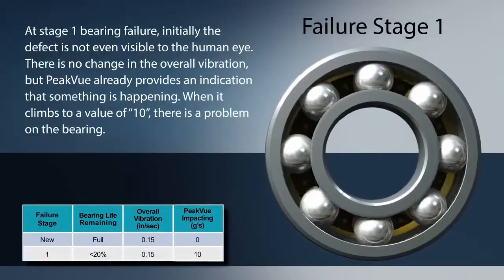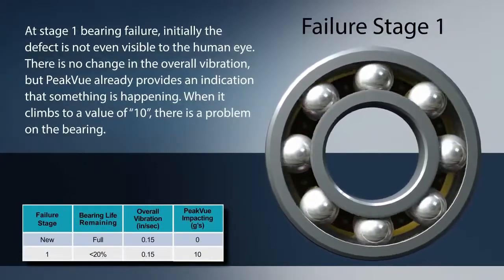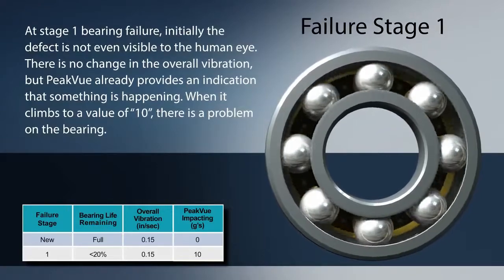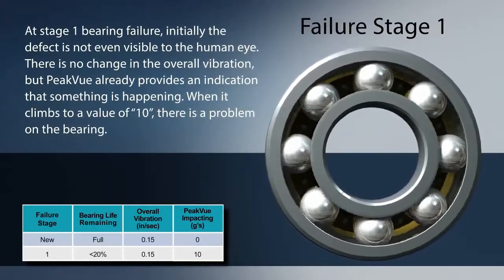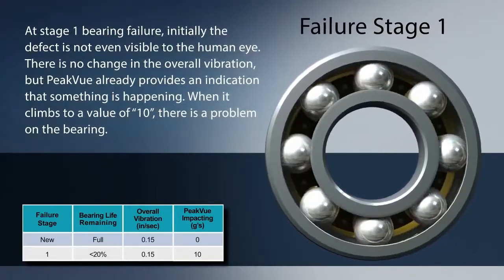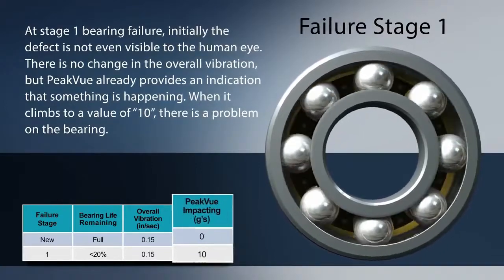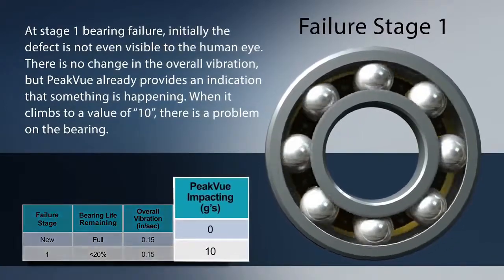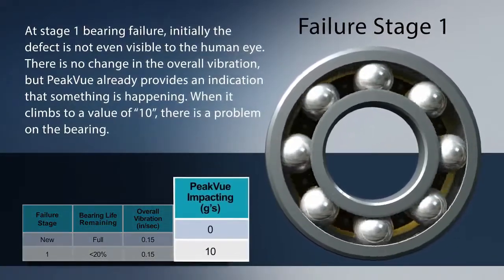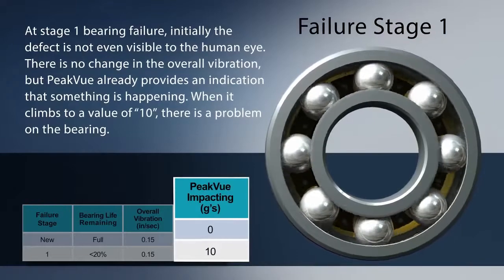At stage one bearing failure, initially the defect is not even visible to the human eye. There is no change in the overall vibration, but peak view already provides an indication that something is happening. When it climbs to a value of 10, there is a problem on the bearing.